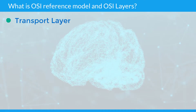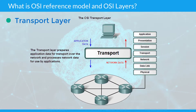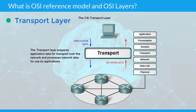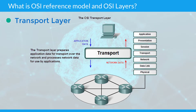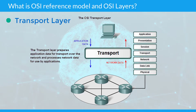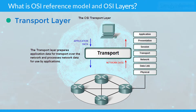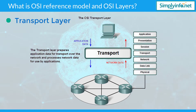Transport layer: This layer manages packetization of data, then the delivery of the packets, including checking for errors in the data once it arrives. On the internet, TCP (transmission control protocol) and UDP (user datagram protocol) provide these services for most applications.